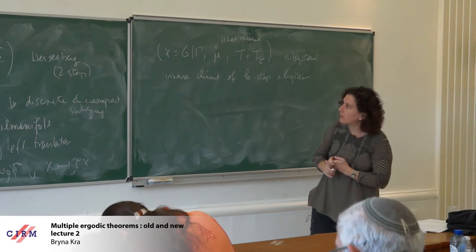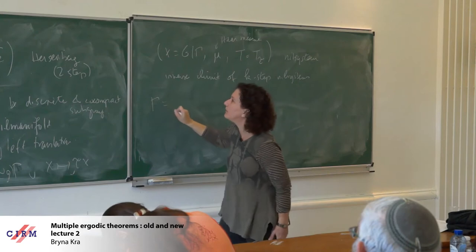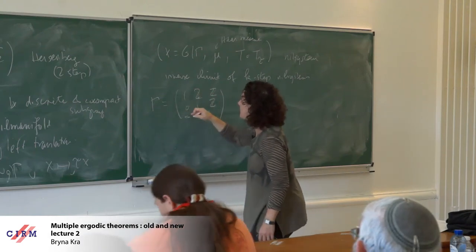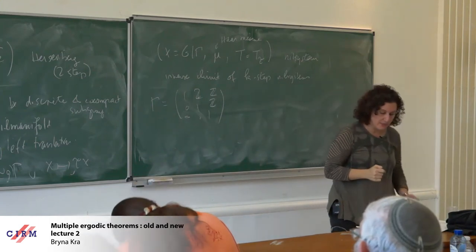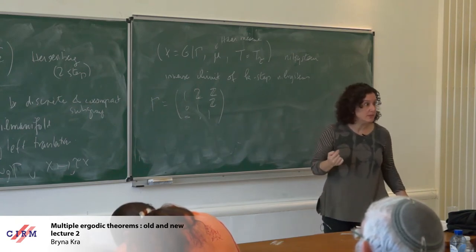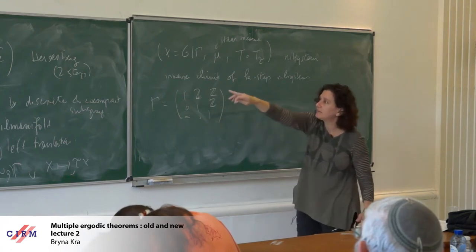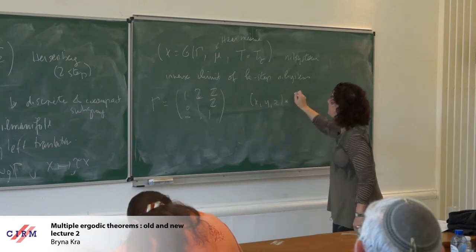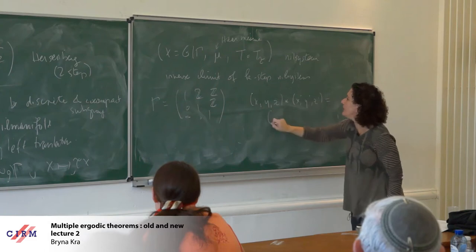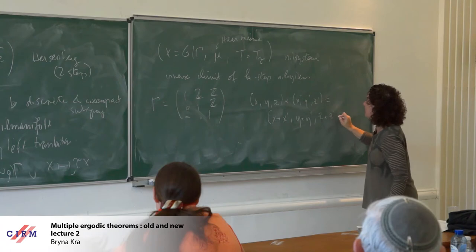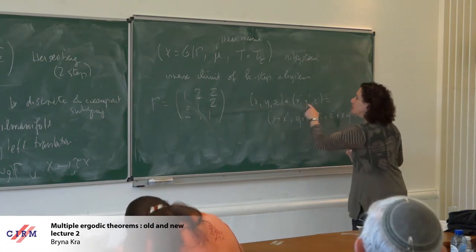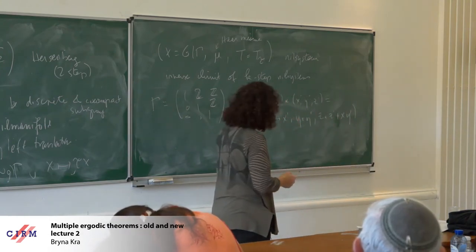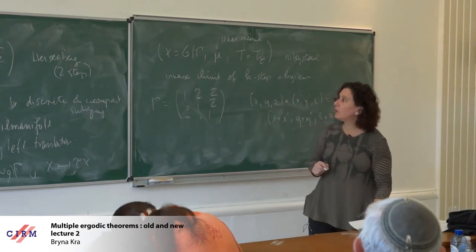I've actually got two examples on the board. Let's stick with the Heisenberg. The discrete co-compact gamma, if this is my G, could be the lattice of upper triangular matrices with ones on the diagonal and entries in Z. Forming G mod Gamma gives the Heisenberg two-step nilpotent nil system. I then need to multiply by some fixed element in G — say with entries alpha, beta — and it's ergodic if and only if, I think, I put alpha and beta in the right place to look like a rotation, and I need them to be rationally independent to get ergodicity.